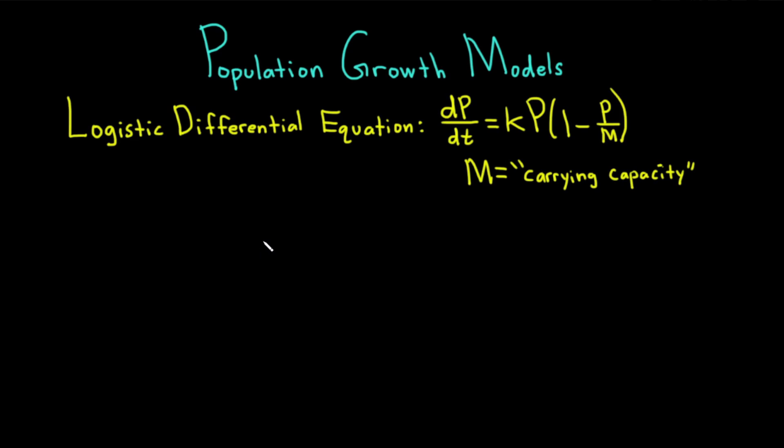We're going to look at a specific differential equation that models population growth, called the logistic differential equation. It says that dP/dt equals kP times (1 minus P/M), where P is the population at a particular point in time and M is called the carrying capacity. The population can never exceed the carrying capacity.